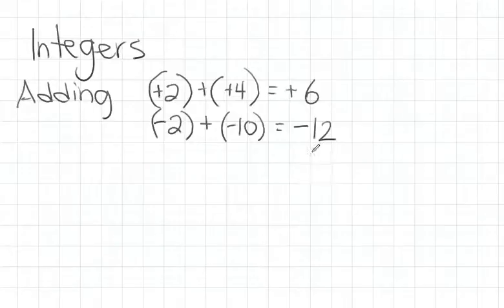Now, where it gets difficult is when you are adding numbers with different signs. So, for example, negative 2 plus positive 4. They're different signs.